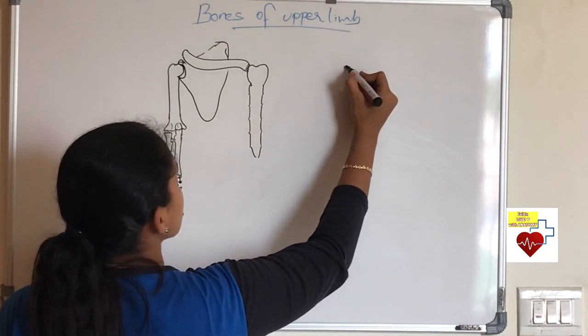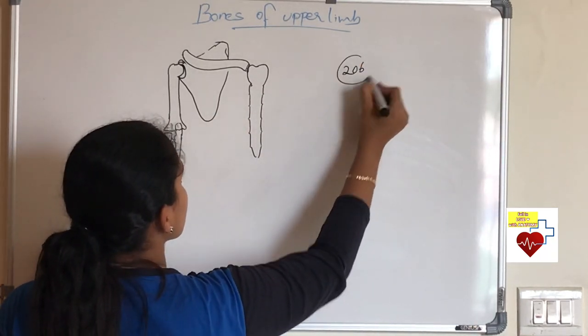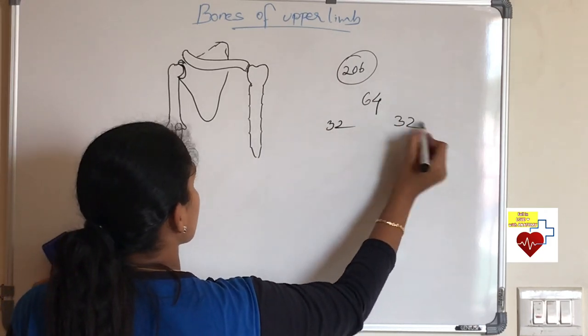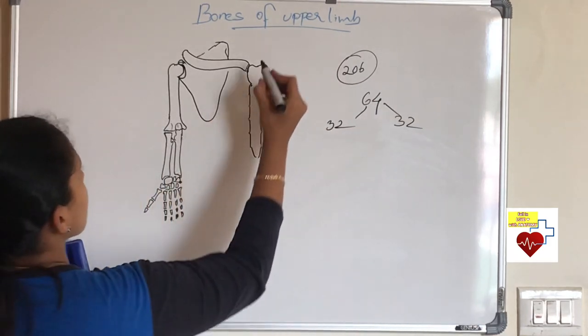Now you know we have 206 bones in our body. In that, 64 bones belong to two upper limbs, that is 32 in each.